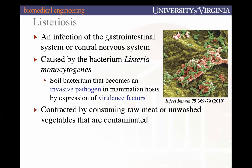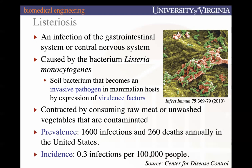Typically, listeriosis infections occur by consuming either raw meat or unwashed vegetables that are contaminated. Some of you might remember about five years ago there was a huge listeriosis outbreak at Chipotles across Virginia, including here in Charlottesville. There was also a couple of years ago an issue with cantaloupe having listeria contamination. This is a reminder to wash your vegetables and not consume raw or undercooked meat. The prevalence is around 1,600 infections and 260 deaths per year in the United States, with about 0.3 infections per 100,000 people.